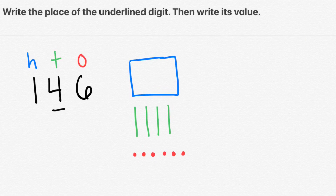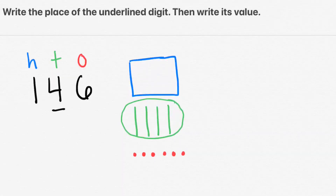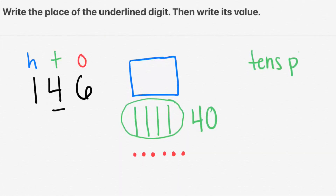Now we need to look at the digit that's underlined. That's in the 10s place, so let's go ahead and circle our 10s. Let's count them: 10, 20, 30, 40. That means the 4 is actually worth 40. The place was the 10s, and the actual value was 40, not just 4.